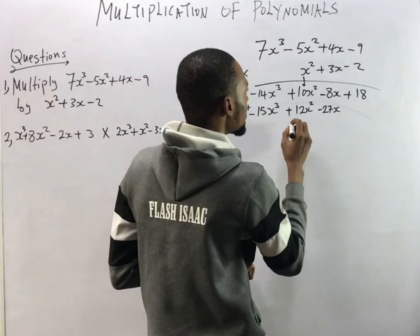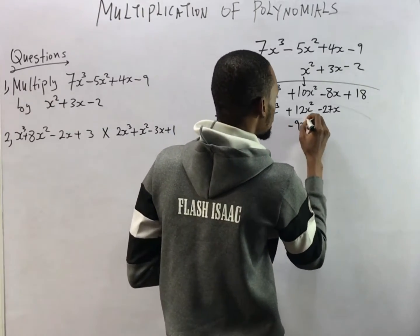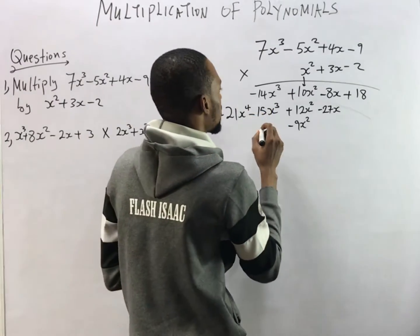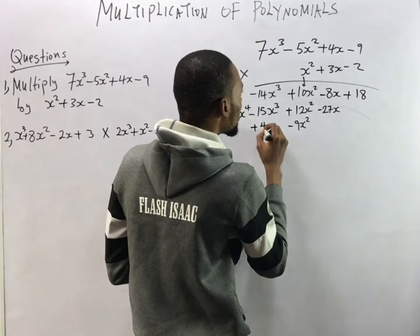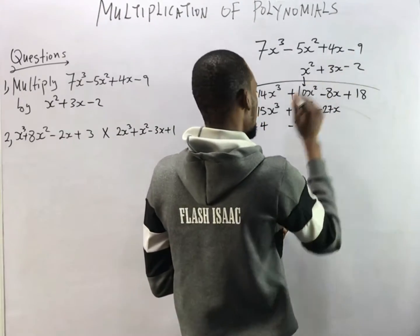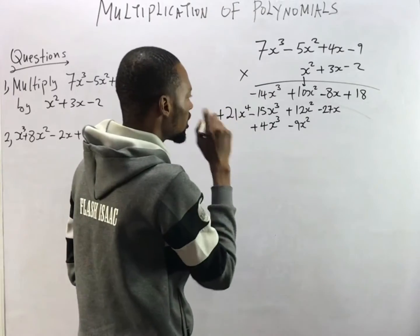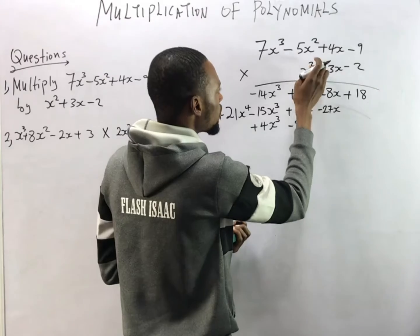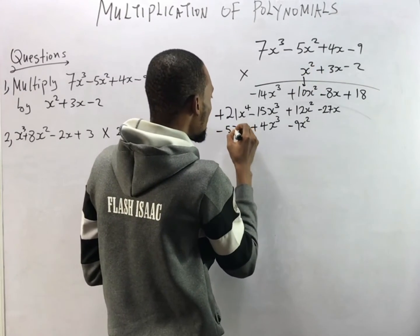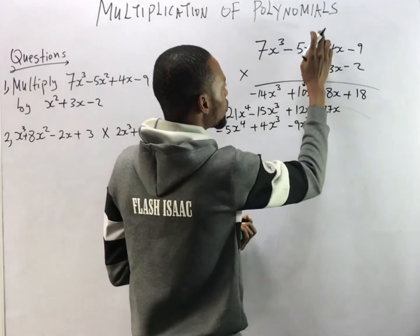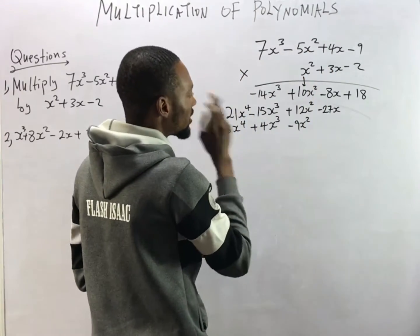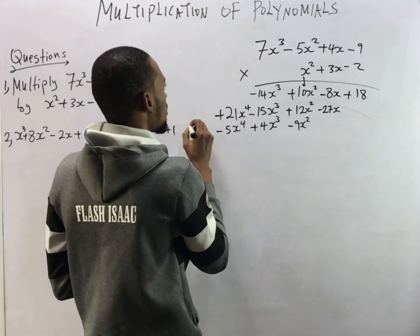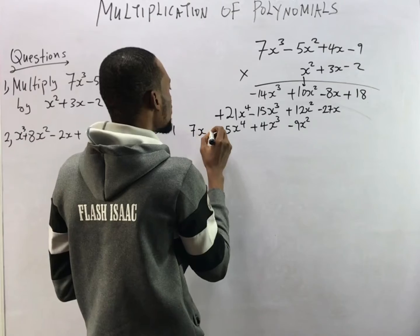Now we multiply by s²: s² times minus 9 gives minus 9s². S² times 4s gives plus 4s³. S² times minus 5s² gives minus 5s⁴, because 2 plus 2 is 4. Then s² times 7s³ gives 7s⁵.